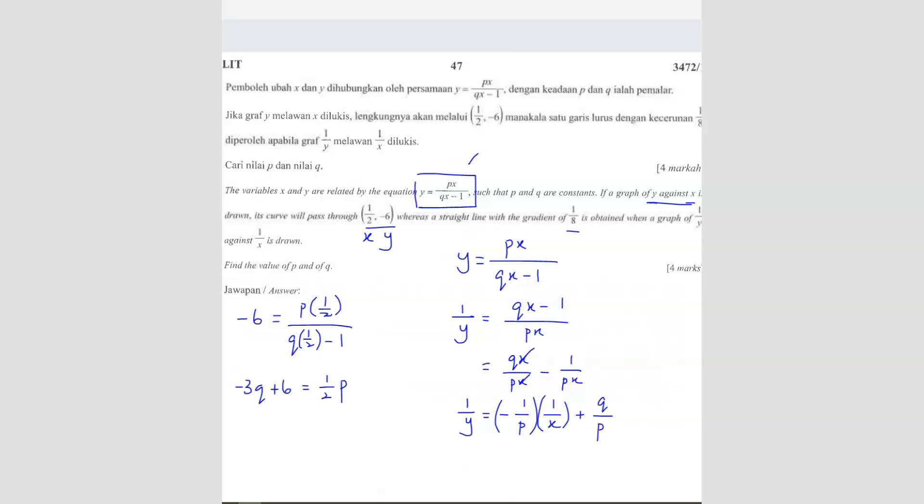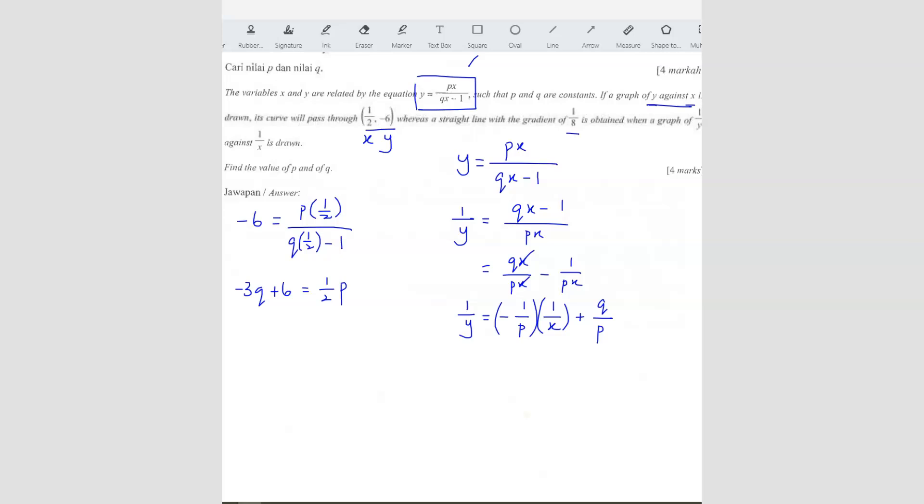times 1 over x plus q over p. So why am I writing like this? Because the equation they gave is what? The graph is graph of 1 over y against 1 over x. So that's why I leave my answer with 1 over y here and 1 over x. So from here, you can see a pattern here. The pattern is what?